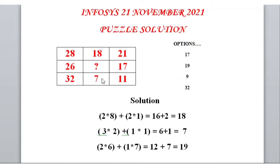So friends, we have to find the logic between these numbers. If we consider the first row, the three elements are 28, 18, and 21. We have to find the logic between these numbers.